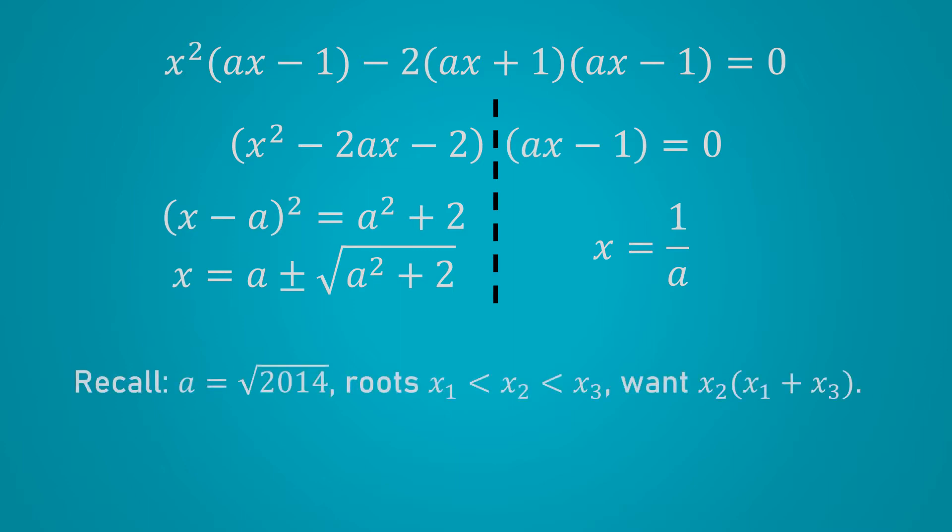Since we have the roots, let's remind ourselves what the problem asked us to do. a is square root 2014 from our substitution. And we have to place the roots in order, x1, x2, x3, and then evaluate x2 times x1 plus x3. Looking at these three roots, a minus square root a squared plus 2 is the only one which is negative, making that x1. Among the other two, 1 over a is much less than 1, while a plus square root a squared plus 2 is much greater than 1, and so we can assign x2 and x3 accordingly. Conveniently enough, this means that x1 plus x3 is just equal to 2a. And so multiplying that to 1 over a gives us the value 2.